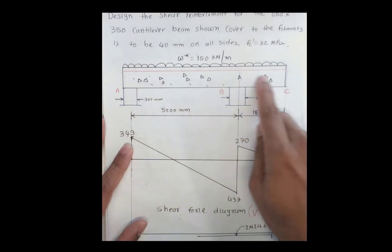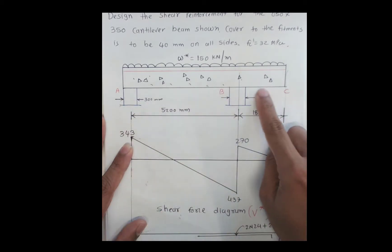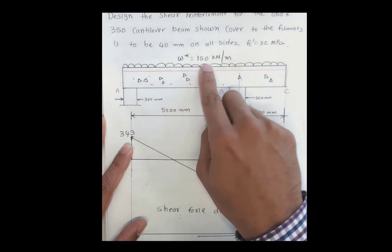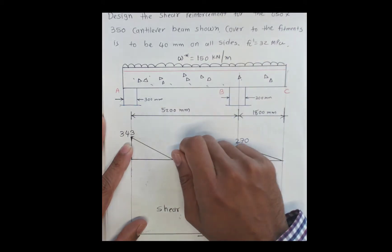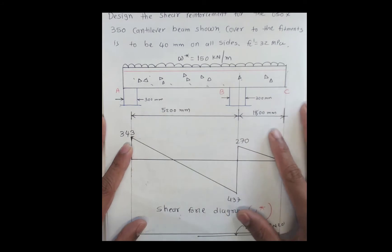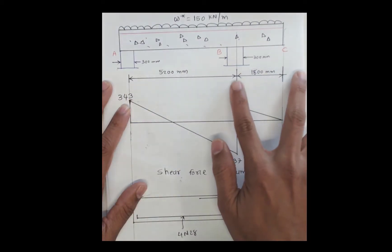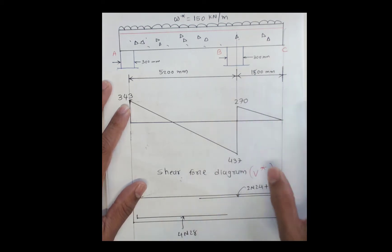The beam has two supports - support at A, support at B, and a cantilever at C. The uniformly distributed load is 150 kN per meter. The support has a width of 300mm. The distance between support A and B is 5.2 meters. Distance between support B and C is 1.8 meters.